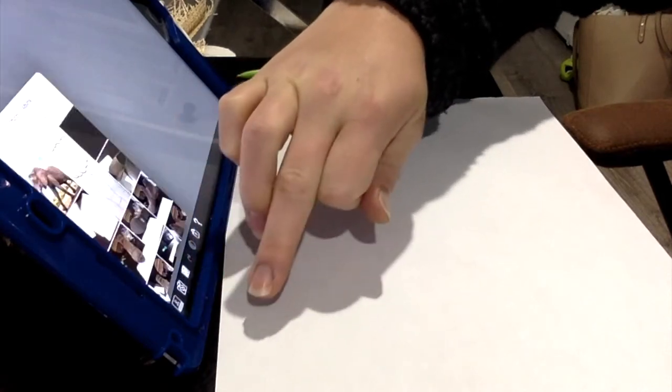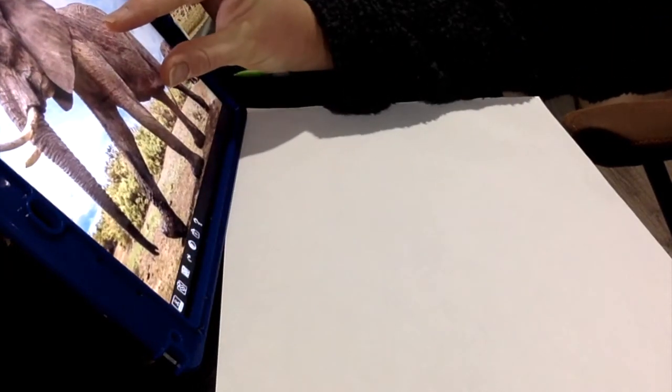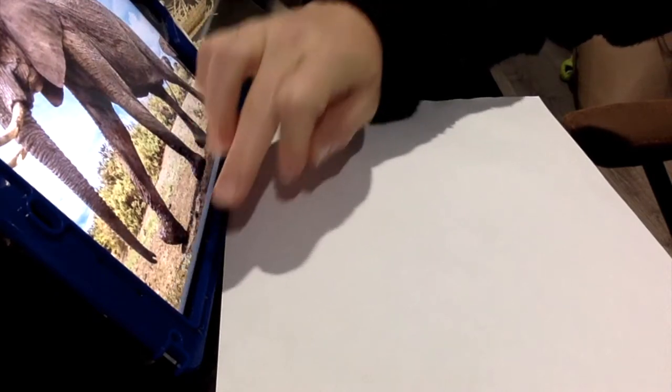I'm going to be using the lightbox trace app to transfer my image onto my drawing paper. When drawing, zoom in your photo so your animal takes up most of your screen.